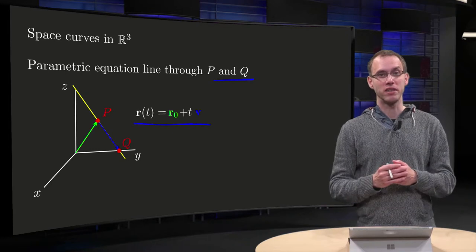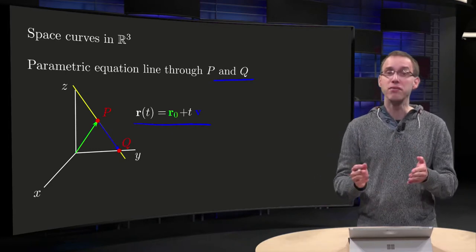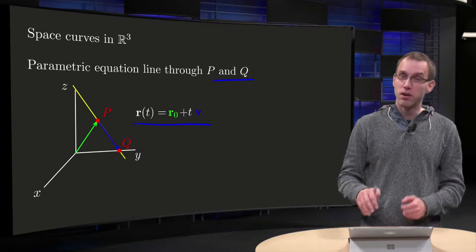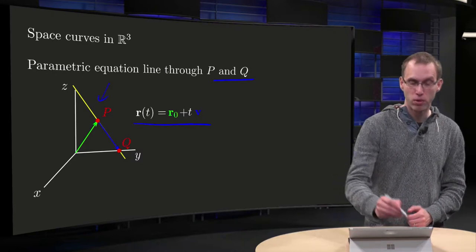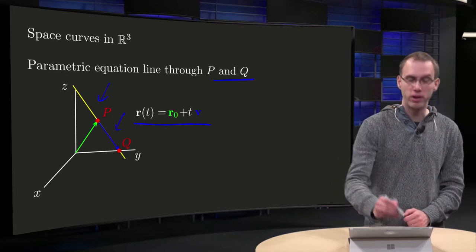So if we want to find a parametric equation of a line, we have to find r0 and v. For r0 you can for example use p or q if you want, and for v we will need the vector joining p and q.